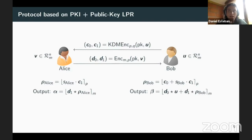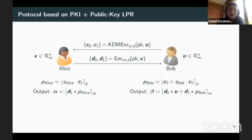Active security does not come for free here. One attack vector is that Bob's input is supposed to be a vector of polynomials modulo M, but the encryption scheme allows him to encrypt elements mod P, which is potentially much larger than M. He can exploit this to learn information about Alice's input. To fix this, we use generic zero-knowledge proofs — for example, proofs by Bomb et al. from Crypto 2018 — which allow proving the well-formedness of the ciphertexts. This is what we do in our work.